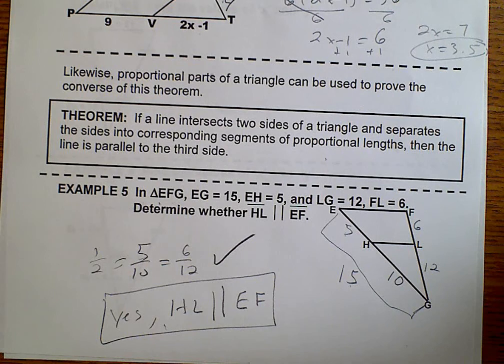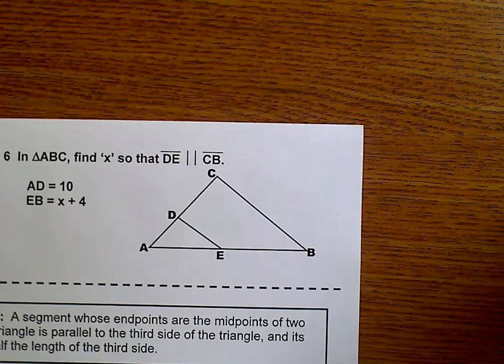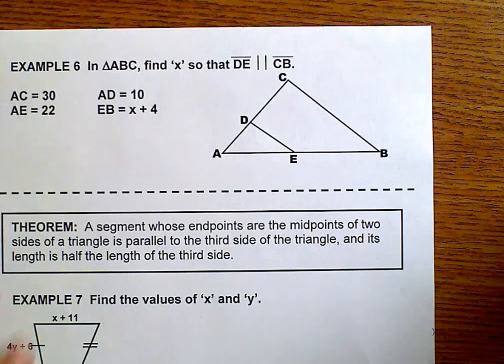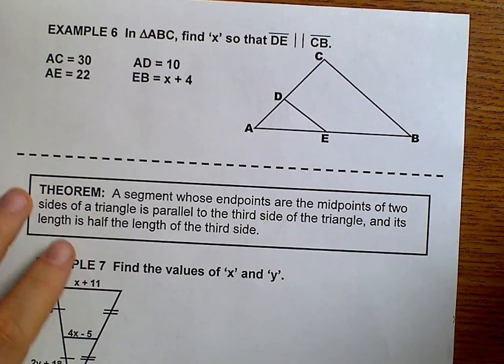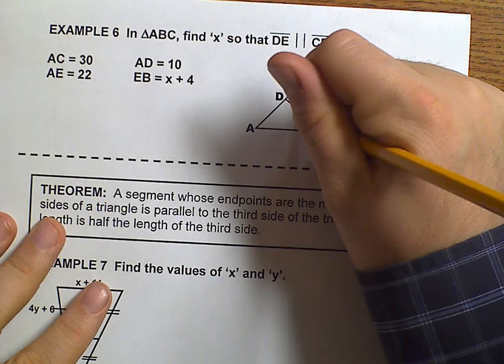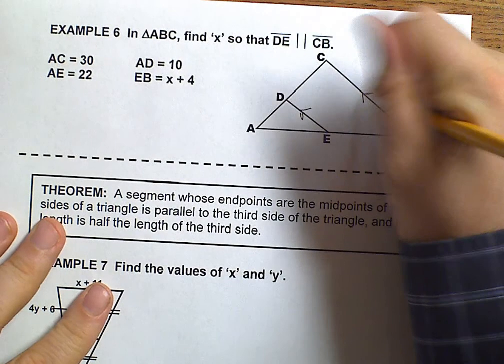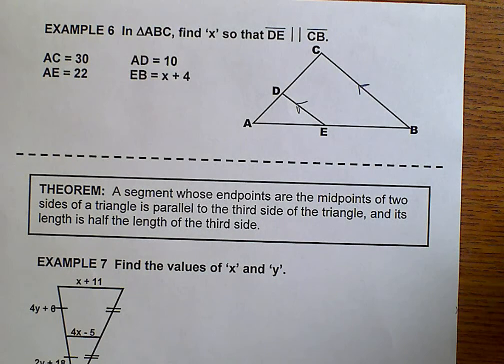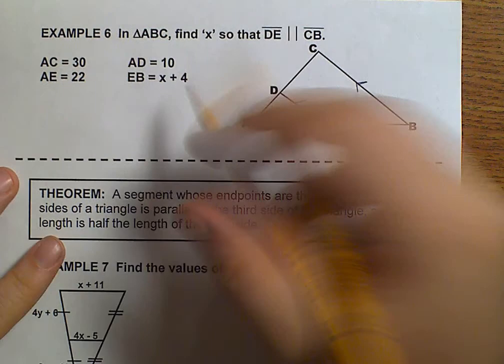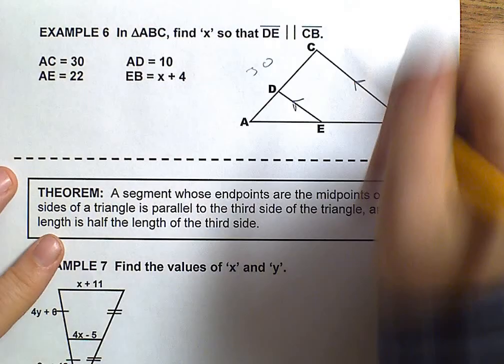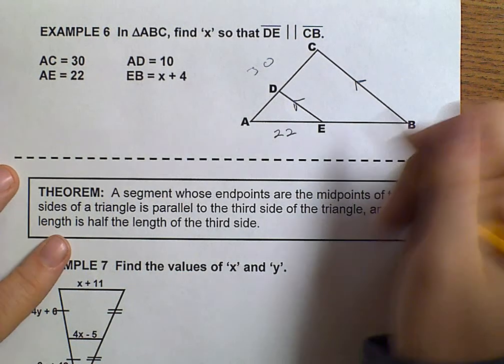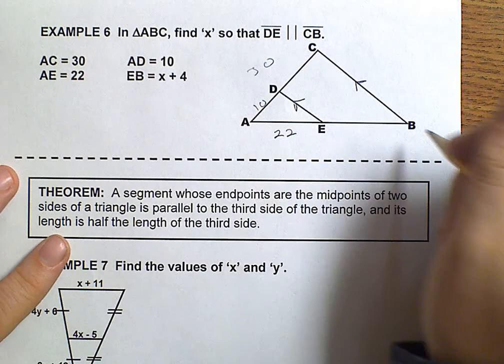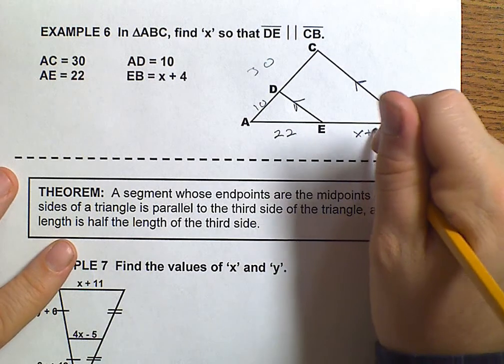Let's go ahead and continue this and see what example number 6 has to offer us. Well, example number 6 says we need to find X to prove that these are parallel. So we're going to try to prove that DE is parallel to CB. They tell us that AC is 30, AE is 22, AD is 10, and EB is X plus 4.